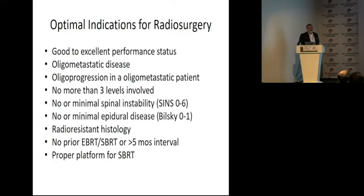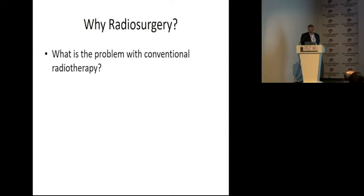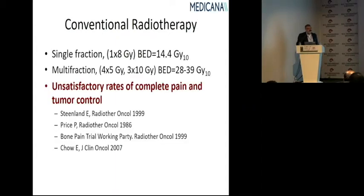Here are examples of spine metastases we can treat — at one, two, or three different levels, including two contiguous levels and one separate level. Why radiosurgery? Because there are unsatisfactory rates of complete pain and tumor control with conventional radiotherapy, which can only deliver very small doses of radiation.